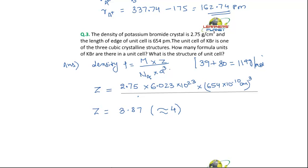So how many units are there in KBr unit cell? There are 4 units.